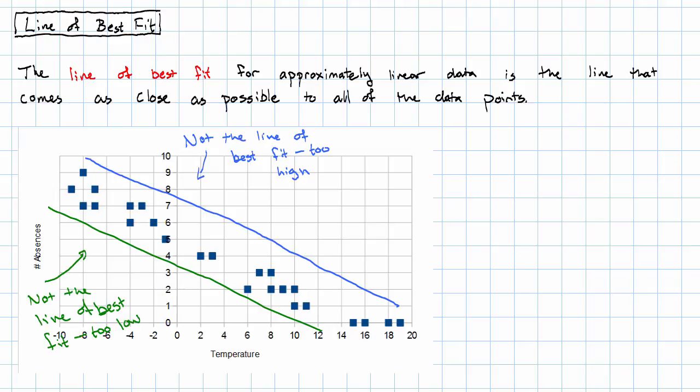Even if we have a line that goes right along, right through the middle of the data, this is not the line of best fit. It's too steep.